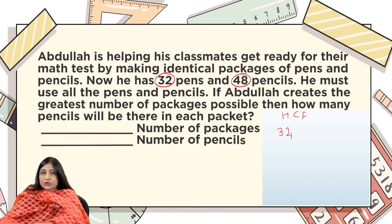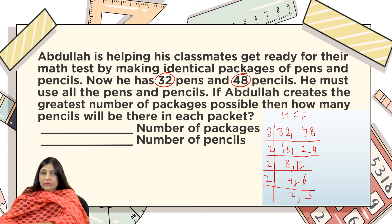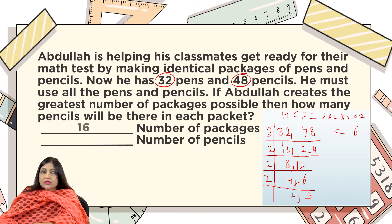I am going to find the HCF of 32 and 48. Both are even numbers, so I start with 2. 32 ÷ 2 = 16, 48 ÷ 2 = 24. Divide by 2 again: 8 and 12. Divide by 2 again: 4 and 6. Divide by 2 again: 2 and 3. Now 2 and 3 are not divisible by the same number, so I stop. The HCF is 2 × 2 × 2 × 2 = 16. So the number of packages he is going to make is 16.